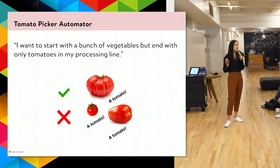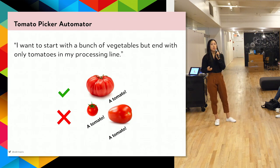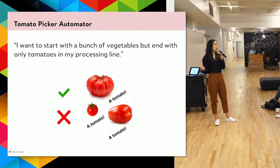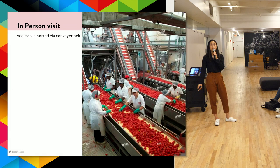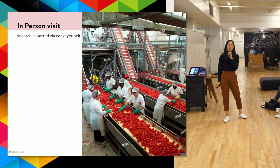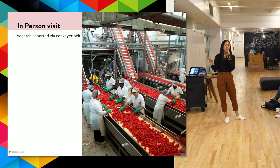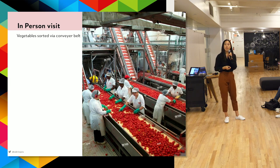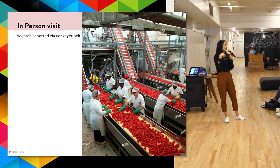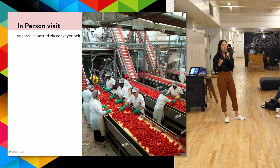As a UX designer, I first go out to see who I'm designing for and whether they actually need this product. On an in-person visit, I see tomatoes being sorted on a conveyor belt with people picking them out as they go from one end to the other. It's loud and noisy. Most people don't have computer screens — maybe just one person does. These are all things we discover through in-person visits.